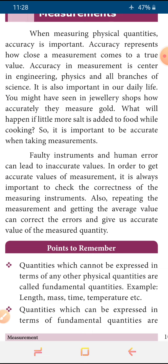In some cases, in the laboratory, we may make continuous mistakes. If that arises, we can take two, three, or four readings — we can repeat the readings — then we can find the average value as the corrected one. And that's about unit number one, measurement. We discussed a lot of things.